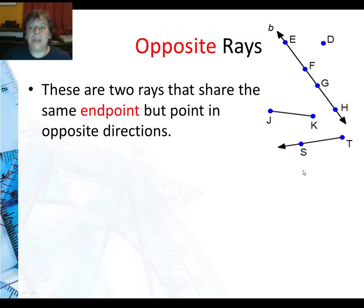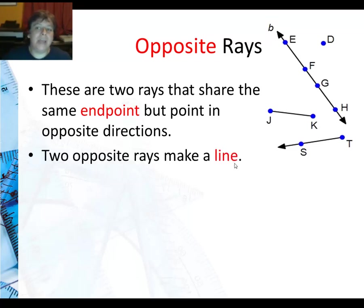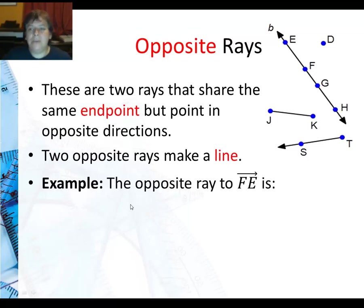Now opposite rays are two rays that share the same endpoint but point in opposite directions. And the cool thing is you can put two of them together and they will always make a line with no overlapping.